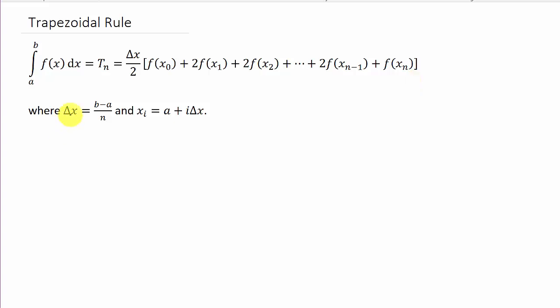And then delta x is b minus a over n. n will be given to you. And the x sub i is a plus i delta x. That just gets you to the next x naught, x sub 1, x sub 2, x sub n minus 1, and so on.